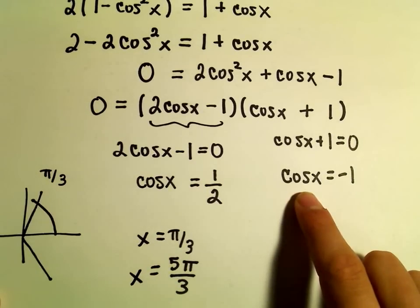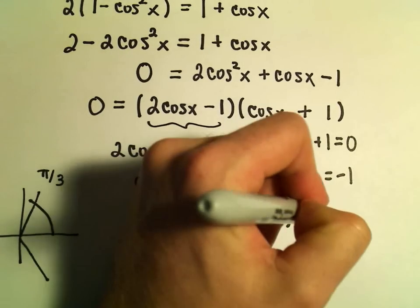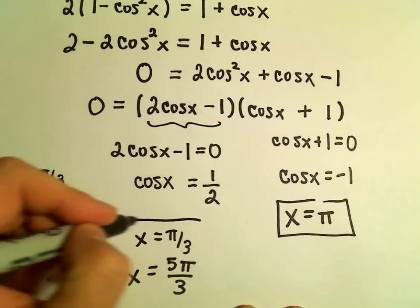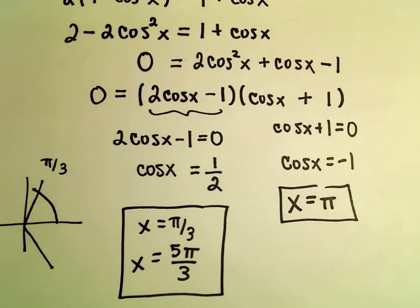Where does cos x equal -1? I believe cos x = -1 at the angle of π. So those would be our solutions for the first equation. We've now found all solutions in the interval from 0 to 2π.